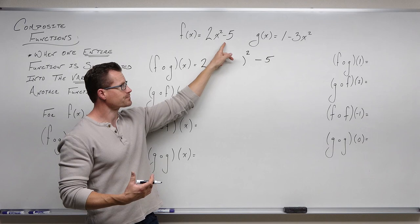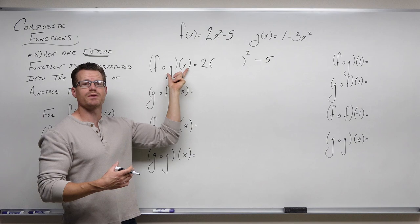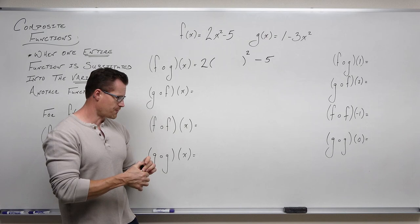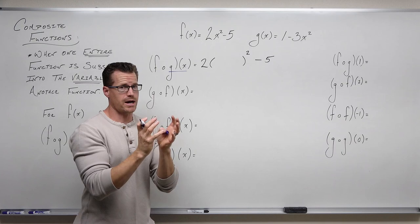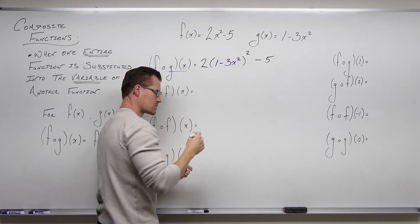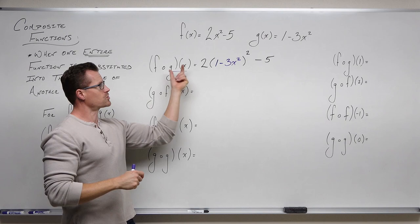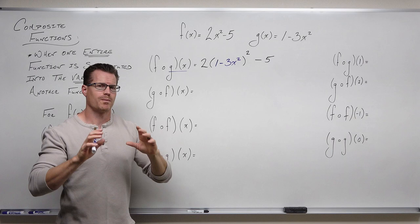Remember how I taught you to evaluate — I always write a parenthesis and put a number in there. In this case, we're writing a parenthesis and putting another function in. So f opens up, and the second function is what they're telling you to put inside. I look at my composition: the first function is f, I write f with a blank space allowing me to plug in for the variable, and then the second function listed is what you put inside the parenthesis — the entire thing. Don't separate it. g of x is 1 minus 3x squared, and that is what I'm evaluating inside the function f. That's all there is to composition of functions.